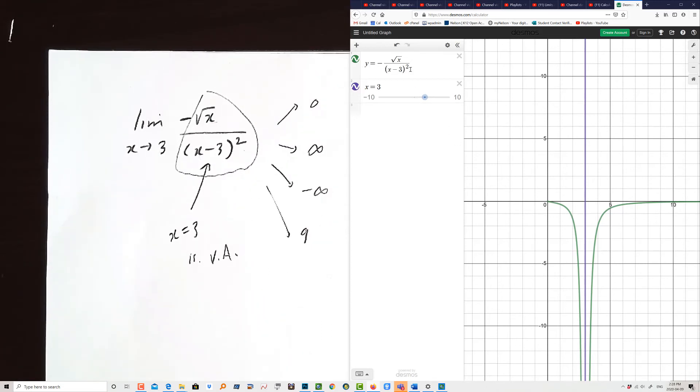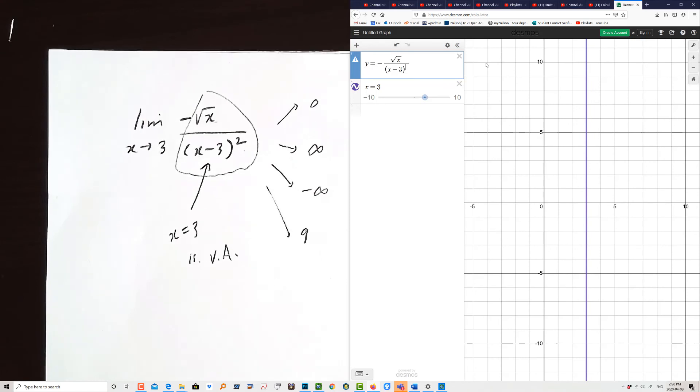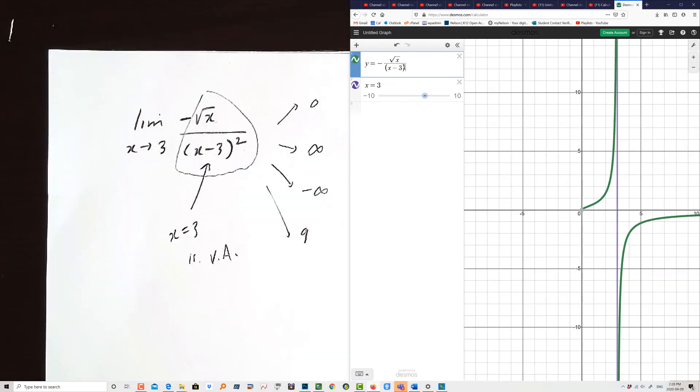Now if we change the question, not squared, but if I change this question to just become to the exponent 1, it's going to change. So you can see I erased the square here, and now this question has changed, and you can see this is coming up from the left. The left-hand limit is going to be positive infinity, whereas the right-hand limit is going to be negative infinity. So the question changes depending on whether we include the square or not on the bottom.